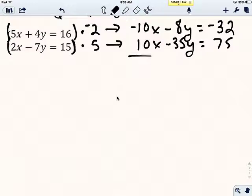All right, good. Now I've got two equations where I can cancel. I can cancel the x's because I've got a positive 10x and a negative 10x. Now, negative 8 plus negative 35 is going to be negative 43y.